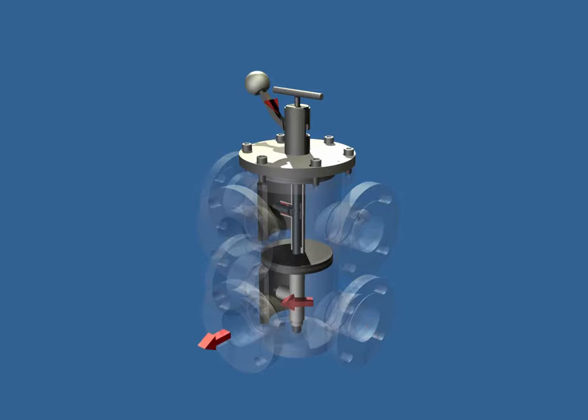The outlet of your filter vessel is connected to the lower working port of the HiCoA valve. The flow enters the lower section and is directed to the discharge nozzle of the valve.